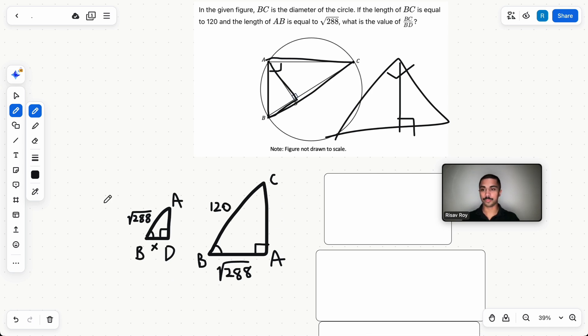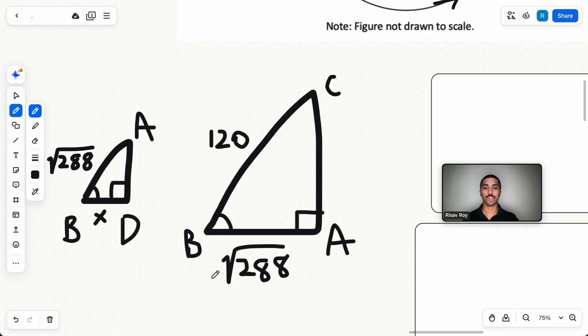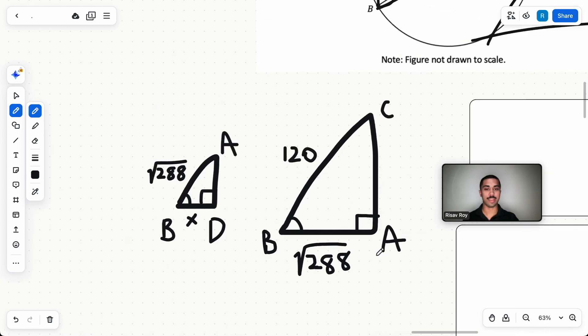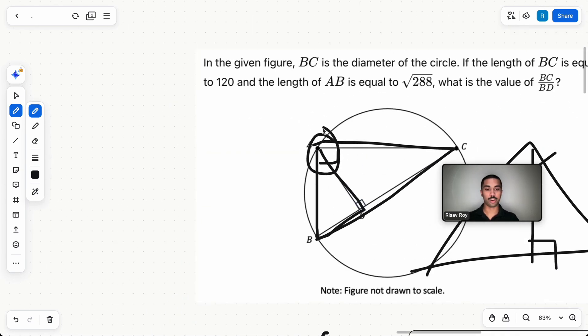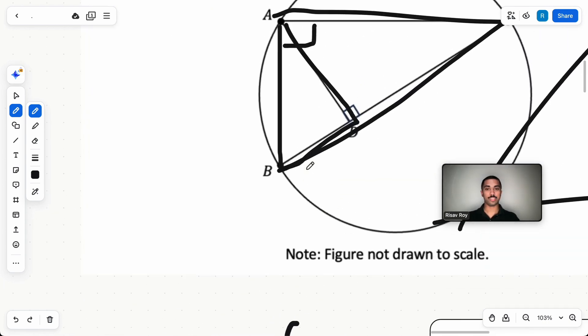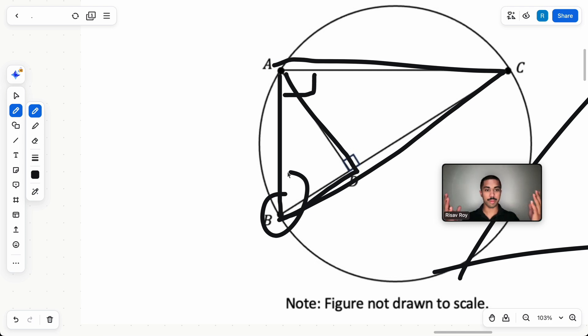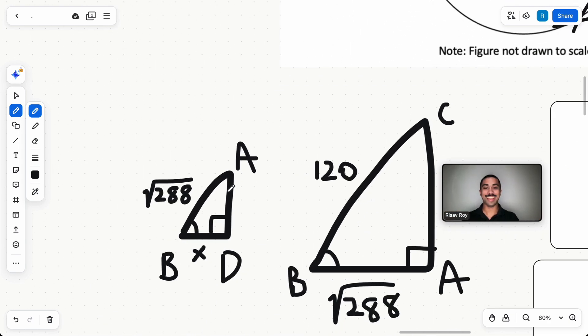We have ABD as one of our triangles and then ABC as the other triangle. Label everything. And the way we know that these triangles are similar is because there are two angles that are the same. When we have two angles that are the same in two separate triangles, those triangles are similar. That means that their sides are proportional. So in this case, D and A have the same angle measure, right? A for the big triangle, D for this little triangle right here. B is also the same angle because it's literally the same angle. I don't know what else to say about that.